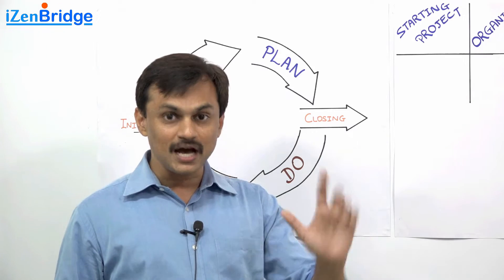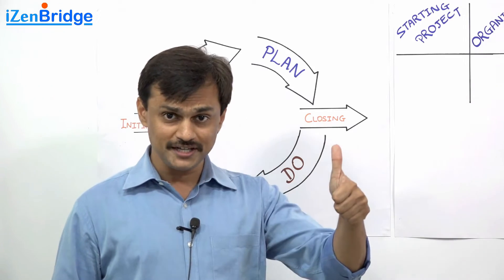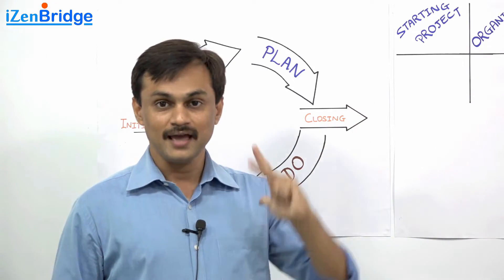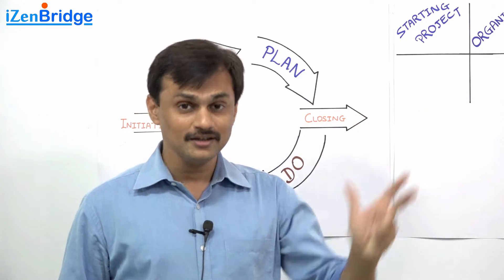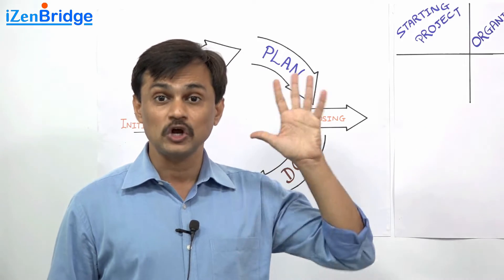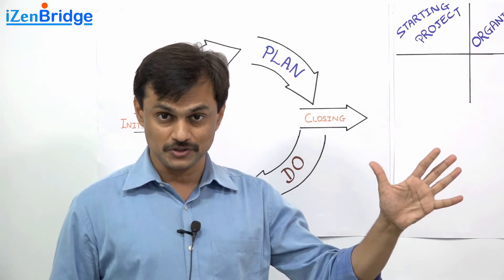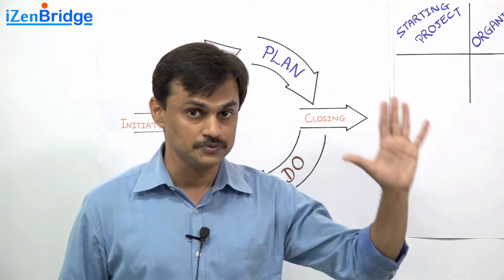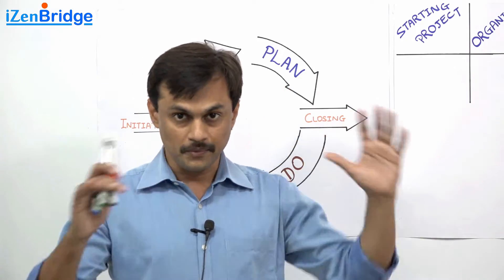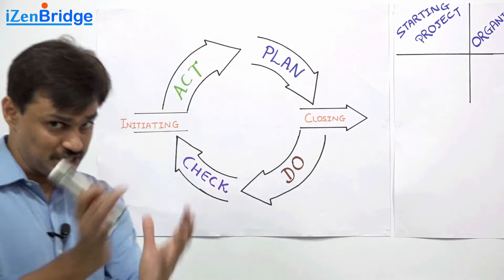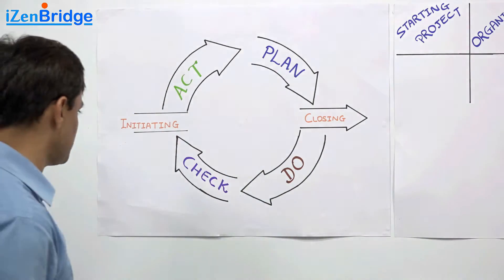These 5 process groups are: Initiating, Planning, Executing, Monitoring and Controlling, and Closing process groups. These are the 5 process groups of project management which group these 49 processes.